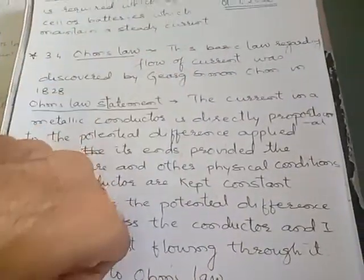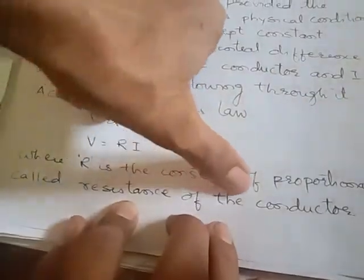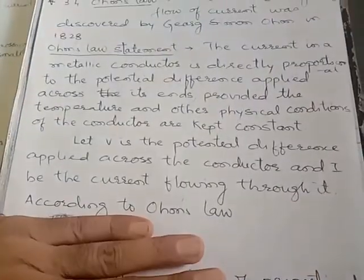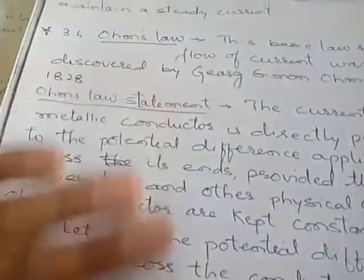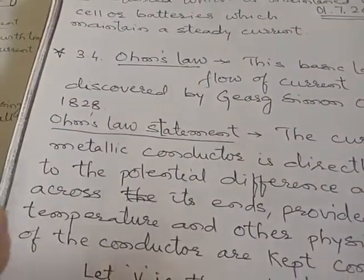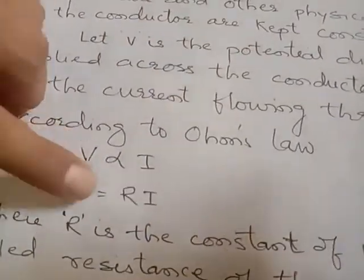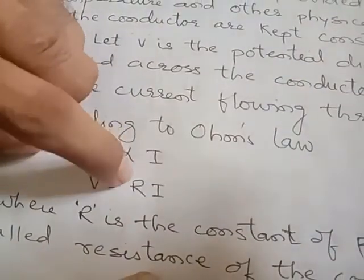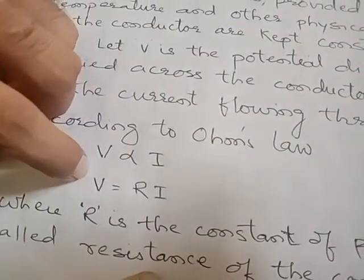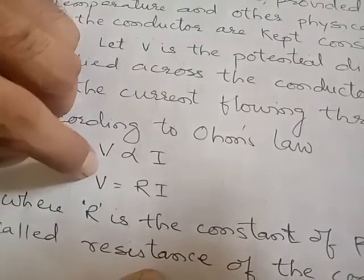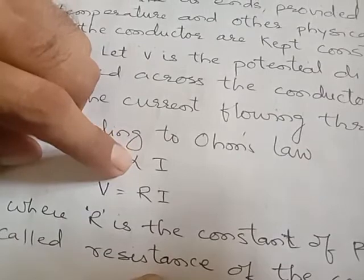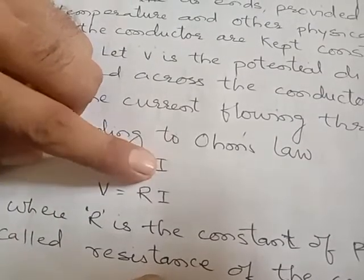George Simon Ohm defined R as the resistance of the conductor. So the formula to remember from Ohm's Law is V = RI, where I is the current, R is the resistance, and V is the potential difference. The more potential difference applied across any wire, the more current will flow.